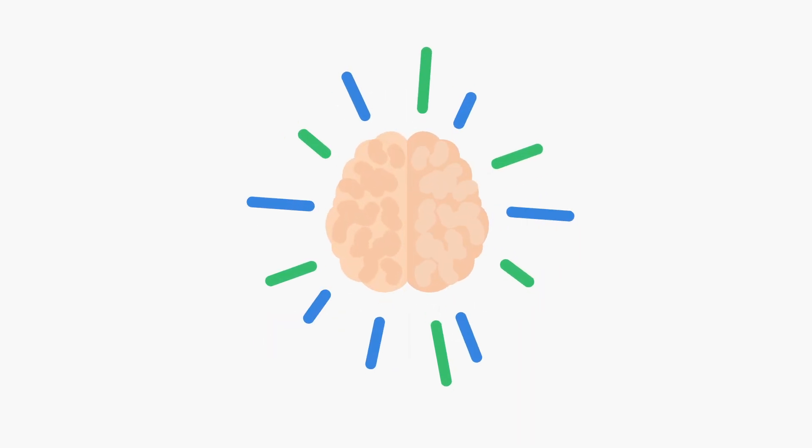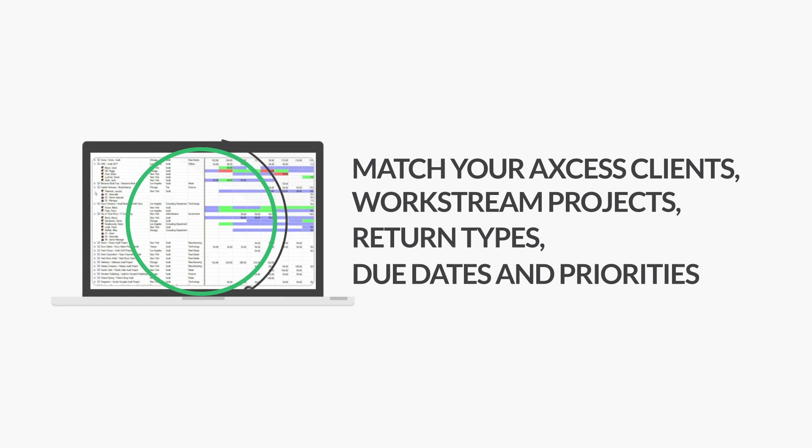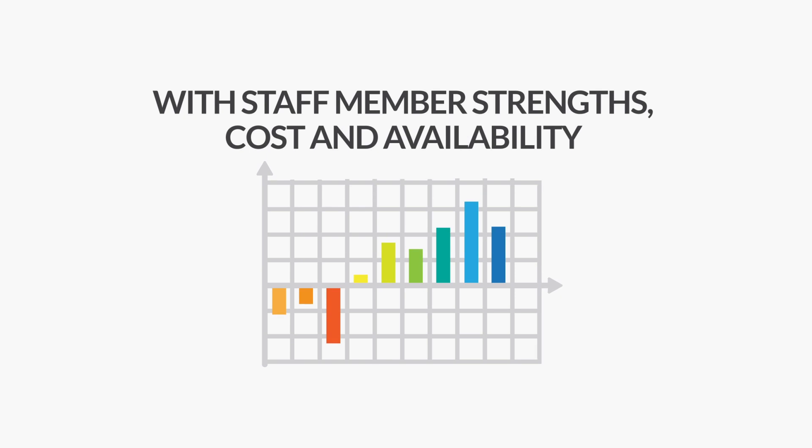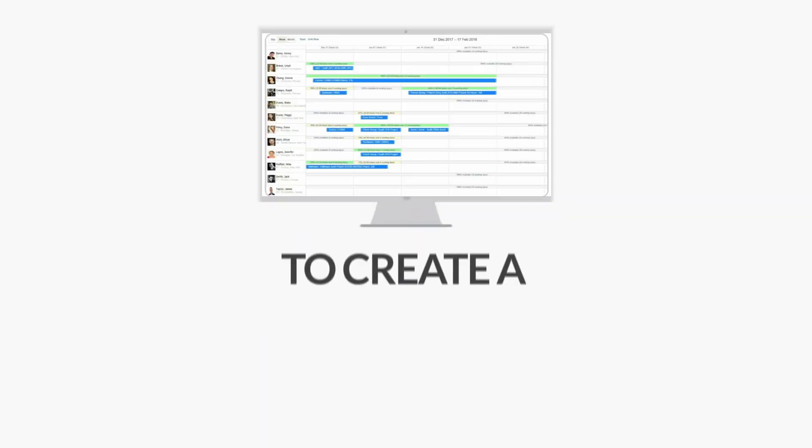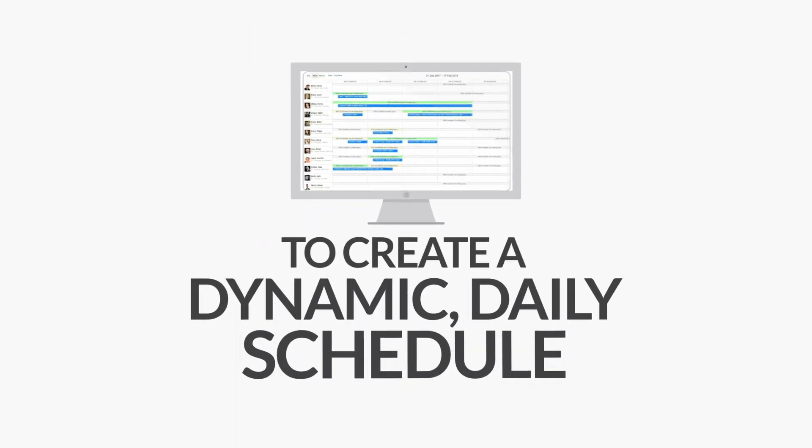Empire Automated Tax Scheduling uses AI to match your Axcess clients, workstream projects, return types, due dates, and priorities with staff member strengths, cost, and availability to create a dynamic daily schedule which reflects work in progress, work completed, remaining work, and changes in priorities.